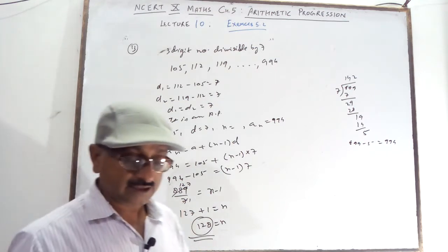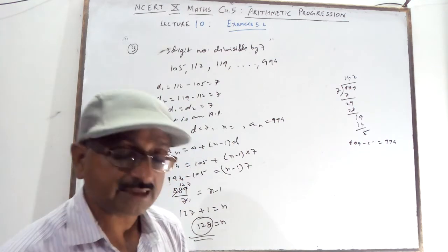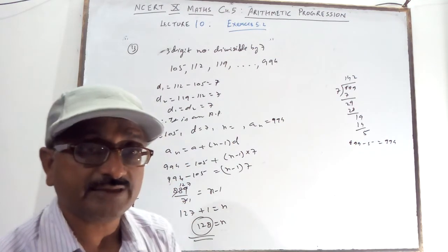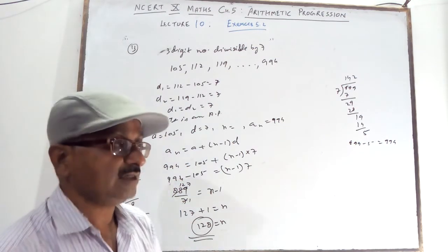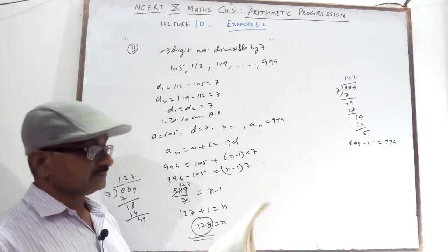So 128 three-digit numbers are divisible by 7. That is your answer for Question 13.